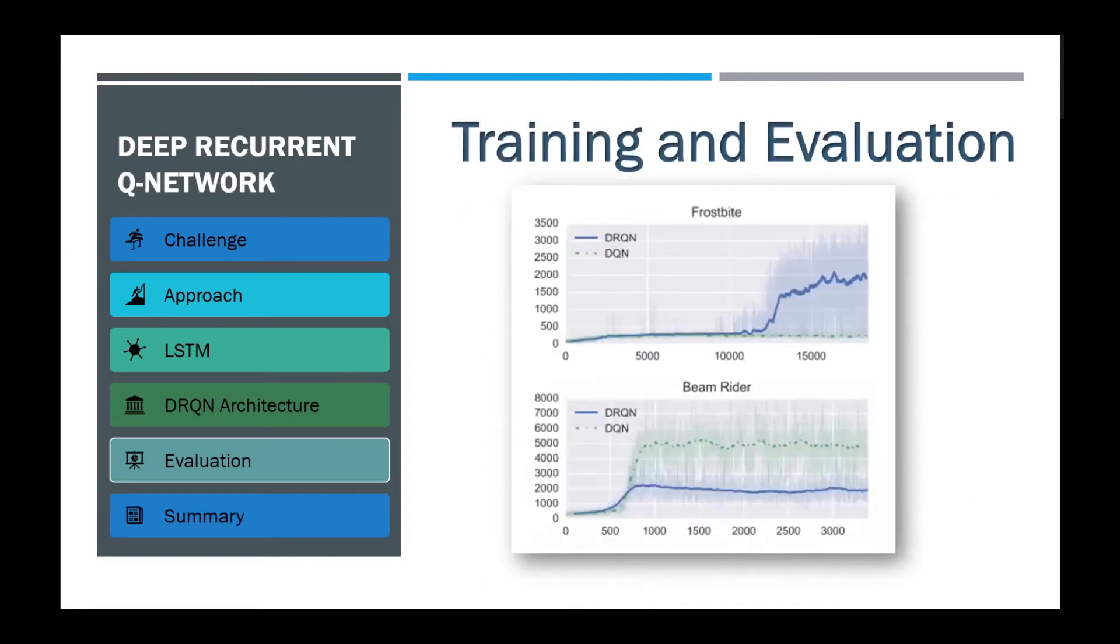The authors compared the DQN and the DRQN networks on different games. Here are the best and worst games for DRQN. As you can see, DRQN outperforms the DQN on the game of Frostbite. It's interesting to see how, after 12,000 episodes, DRQN discovers a policy that allows it to reliably advance past the first level of Frostbite. Also, note how the DRQN does significantly worse on the game of Bean Rider.